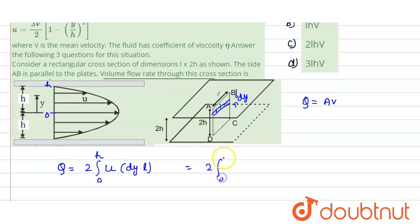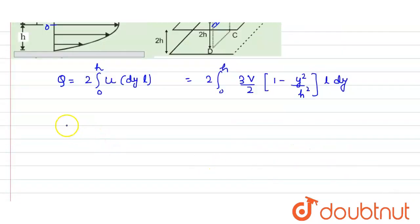So it would be 2 times, 0 to h, then it is 3V divided by 2, times (1 minus y² divided by h²), and l into dy. Now the constant terms which we can take outside, we will be taking it outside. So 2 and 2 would be cancelled, so it would be 3Vl, because V is the mean velocity, it would be constant.